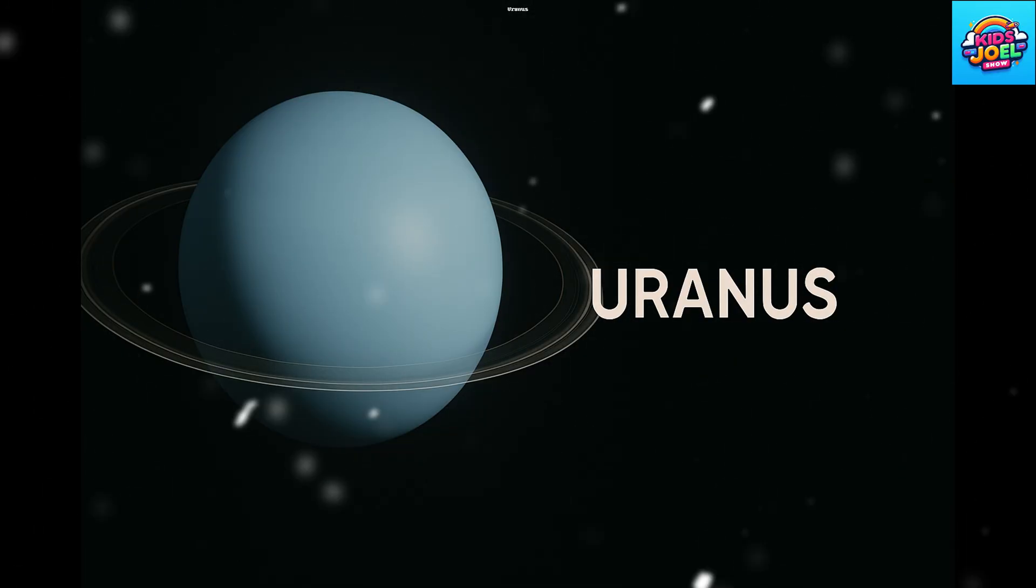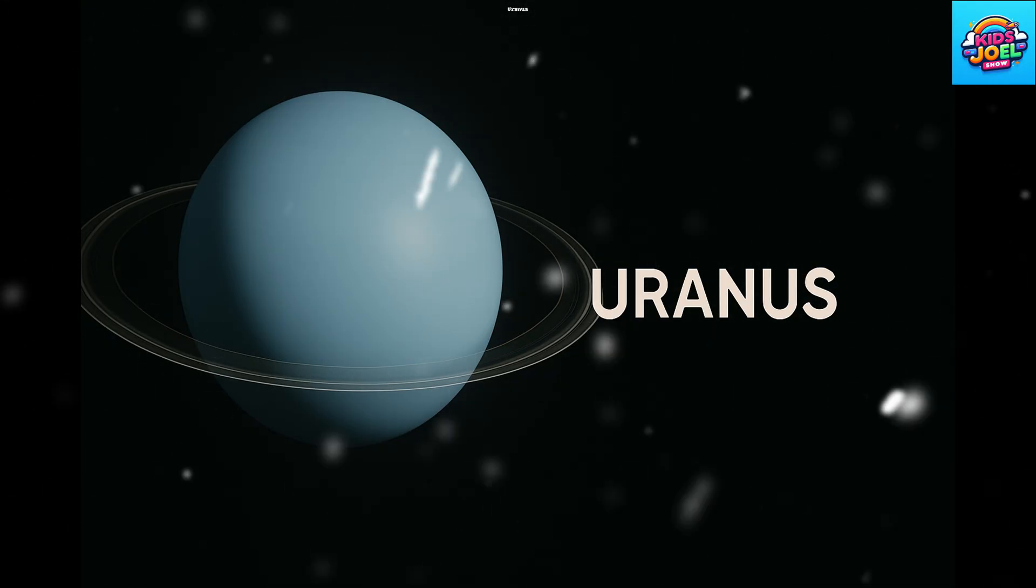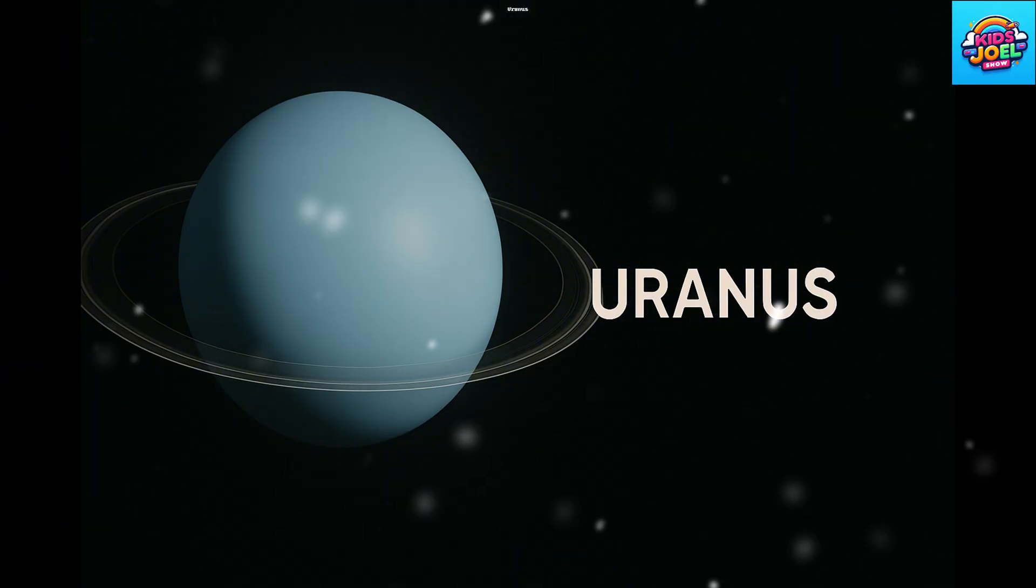Uranus spins on its side, a chilly planet far and wide. Blue-green color, cool and slow, with faint rings that softly glow.